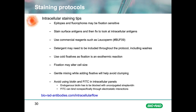Some detergents used in permeabilisation, such as saponin, may need to be included throughout the staining protocol including during washes, to ensure efficient washing off of excess antibody. Always use fixatives cold, as fixation is an exothermic reaction. Fixation may alter cell size and the level of fluorescence, particularly with tandem dyes, so you may need to alter forward and side scatter settings during acquisition. If comparing expression levels between samples, treat them all in the same manner. Finally, avoid using biotin and the fluorophore FITC in intracellular panels, as there is endogenous biotin in some cells requiring blocking, and FITC has been shown to bind non-specifically through electrostatic interactions.